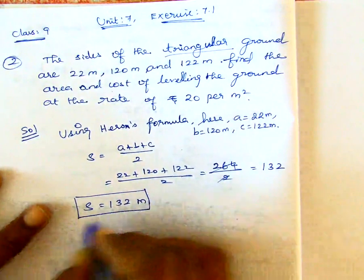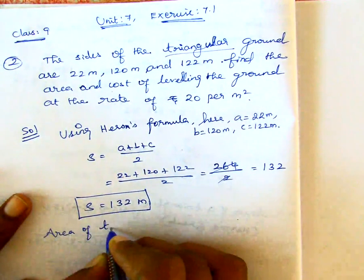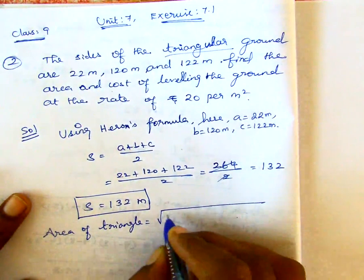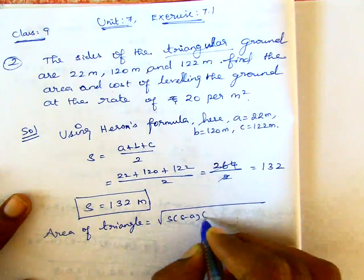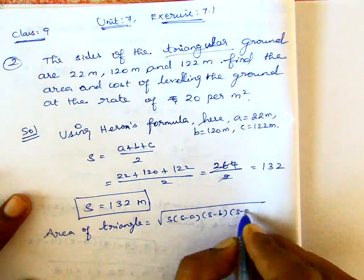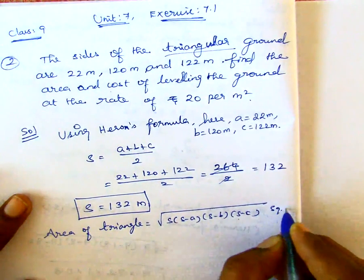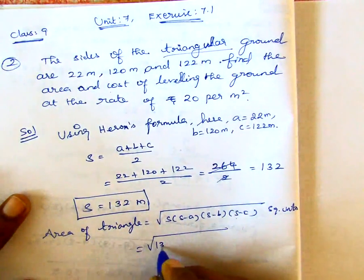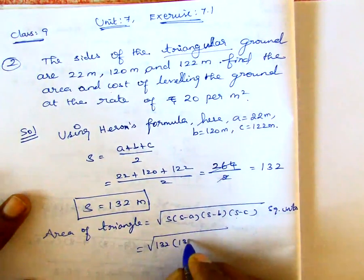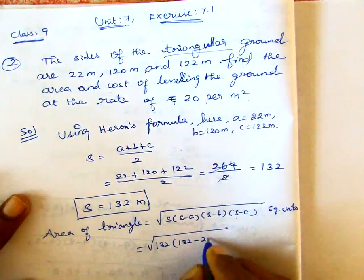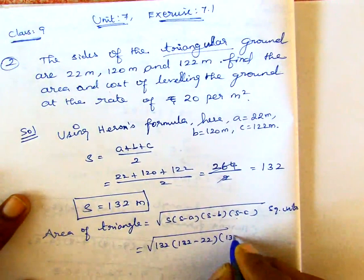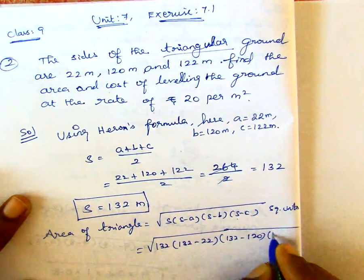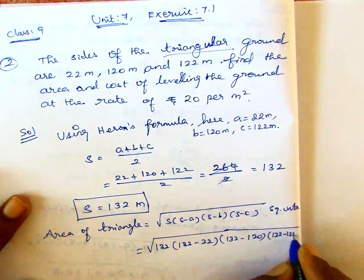We need S to find out, now we need area of triangular ground to find out. So area of triangle formula is square root of S into S minus A, S minus B and S minus C. So, 132 minus 22, 132 minus 120, and 132 minus 122.